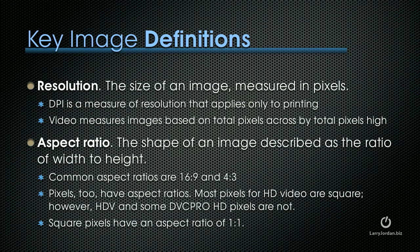The aspect ratio is the shape of an image described as the ratio of its width to its height. Common aspect ratios are 16 by 9 and 4 by 3. However, pixels too have aspect ratios. Most pixels for HD video are square, however HDV and some DVC Pro HD formats are not. Also, NTSC and PAL don't use square pixels — they use rectangular pixels. Square pixels are described as having an aspect ratio of 1 to 1.